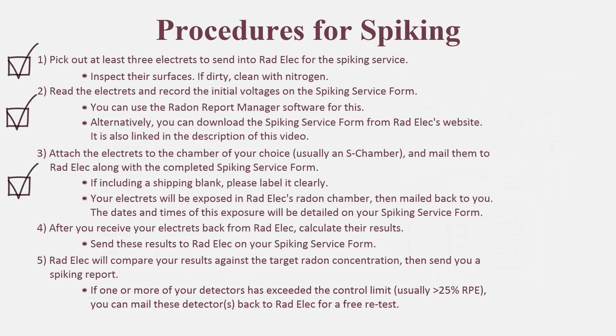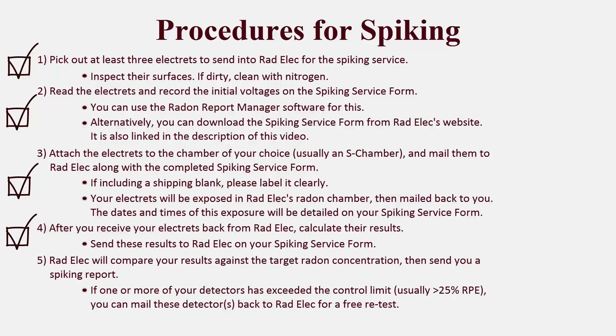That pretty much brings us to the end of the spiking procedures. After you receive your detectors back from the chamber, calculate their results and send your completed spiking service form with the radon concentrations back to Radelec. You can use the Radon Report Manager for this, or calculate them on your own — just make sure your gamma and elevation are set to the values defined by the radon chamber. The fifth and final step involves receiving your final spiking service report from Radelec, entering the target radon concentration into the software, and taking a look at your relative percent errors.